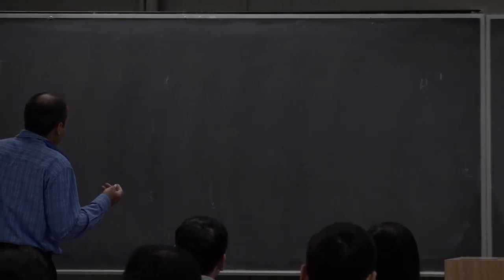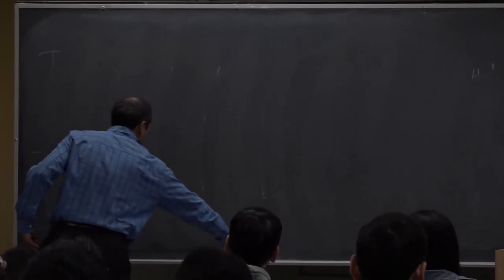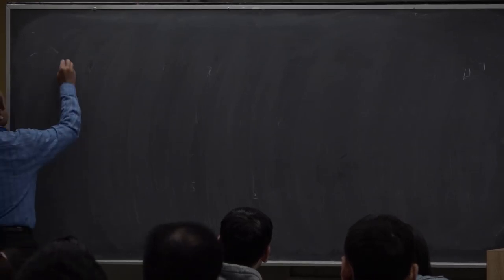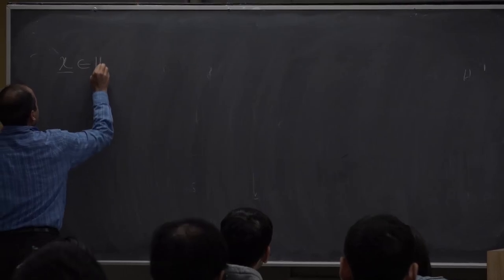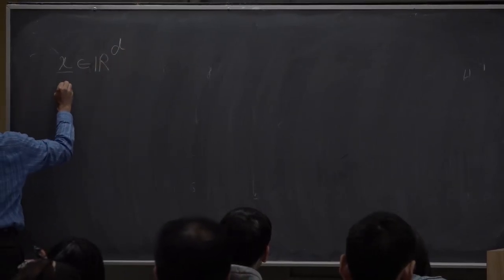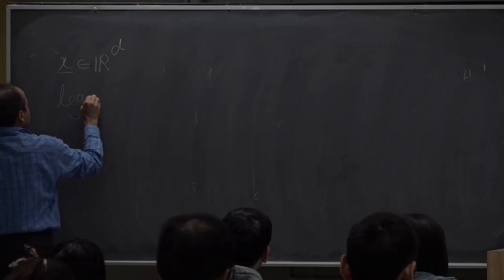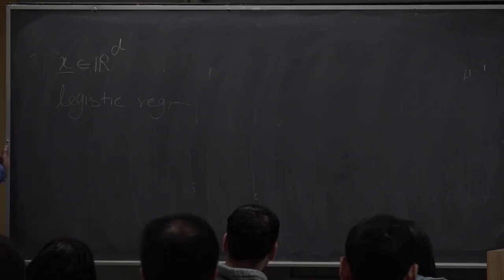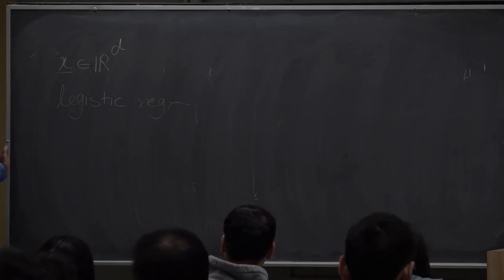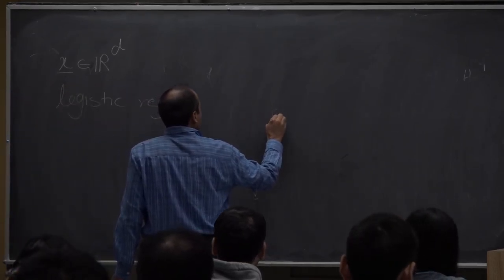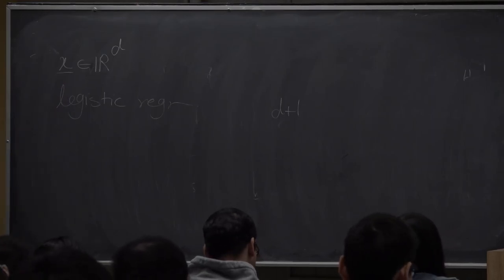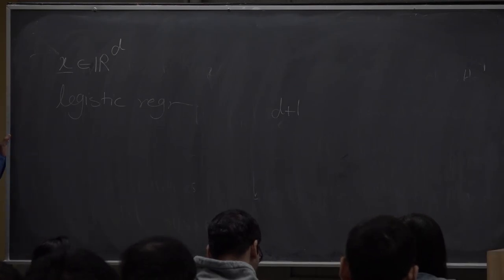If you have a method which doesn't need too many parameters to be estimated, that's an advantage. In logistic regression, if x is d-dimensional, how many parameters do we need to estimate? We need to estimate d plus 1, because beta is d-dimensional and then you have beta-null, which is scalar — so we have d plus 1 parameters.